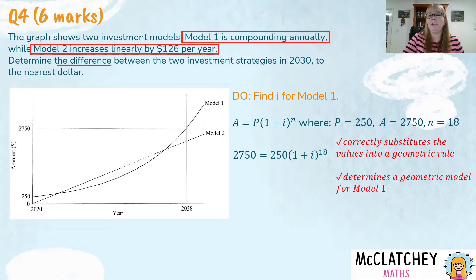So because we've determined a geometric model, if you'd actually treated model one like a simple interest situation then you wouldn't have been awarded the second mark. So you would have possibly lost two marks there because it required you to use a geometric rule. Notice that first dot point is about the correct substitution. It's also about putting the right values into that formula as well. So recognizing that the principal is 250, recognizing that the amount at the end is 2750 and that the number of these is 18. So it's all about the right substitution for that first mark that's awarded. The second mark is about picking the right kind of rule.